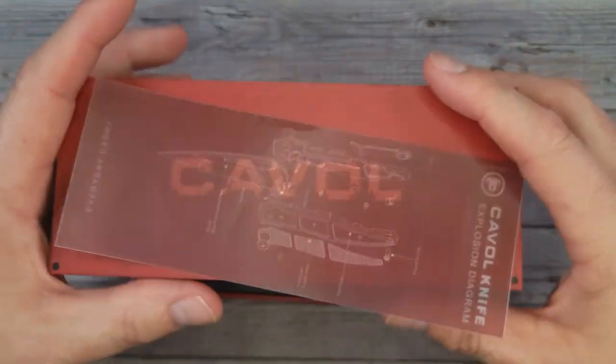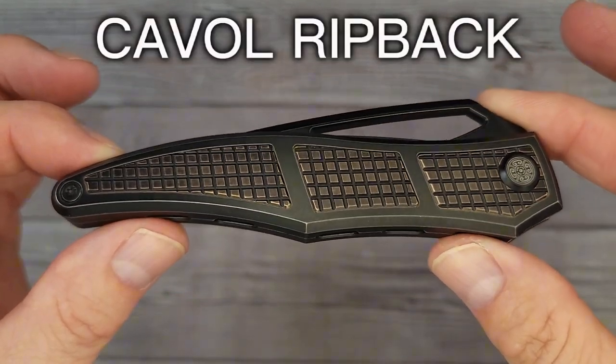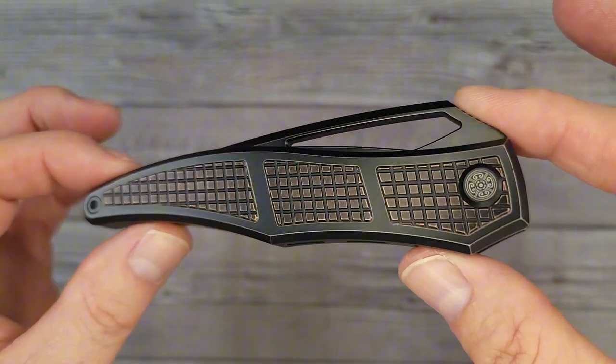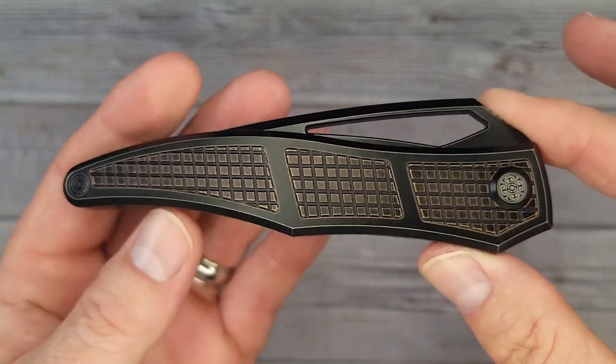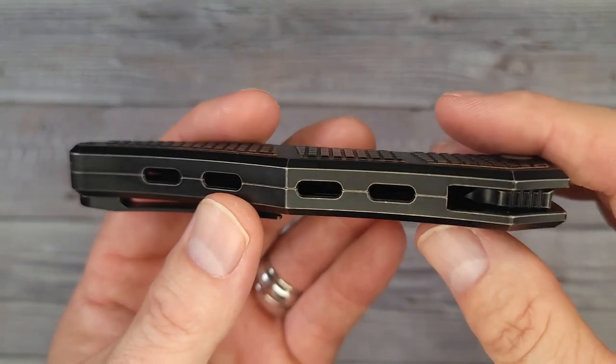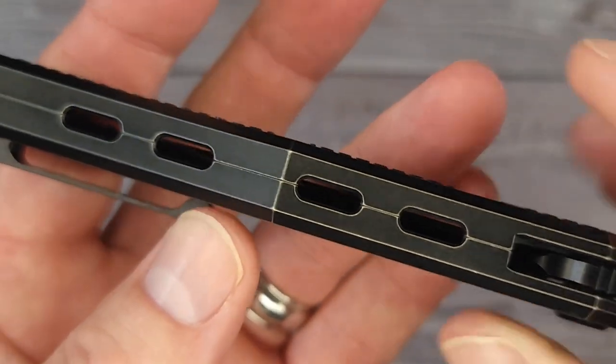This is the Cavall Knives Ripback. Would you look at it? Just look at it. Wow, is this a collector's knife or what? And it is built like a tank. It weighs 4.63 ounces. It's not as heavy as it looks, but it is very solid.